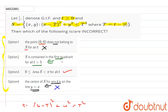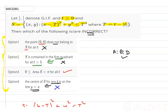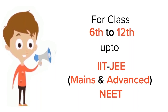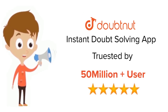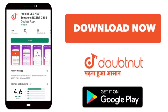So options A, B, and D are the incorrect options — which is what we needed to find. For class 6 to 12th, IIT JEE and NEET level, trusted by more than 5 crore students. Download DoubtNet today. Thank you.